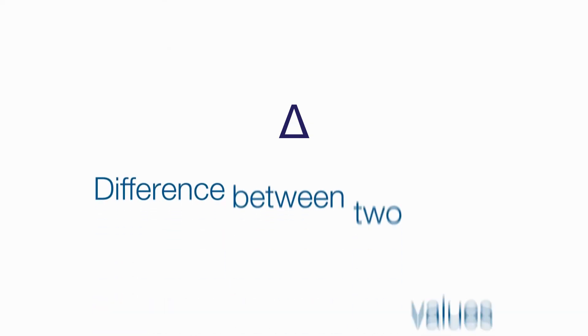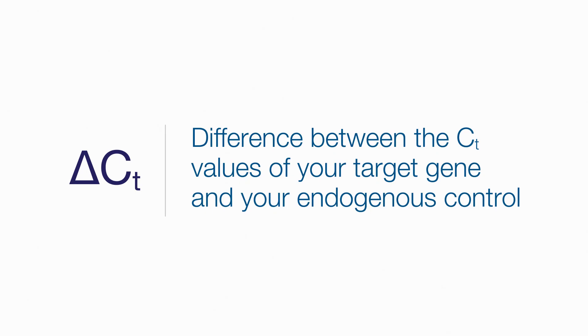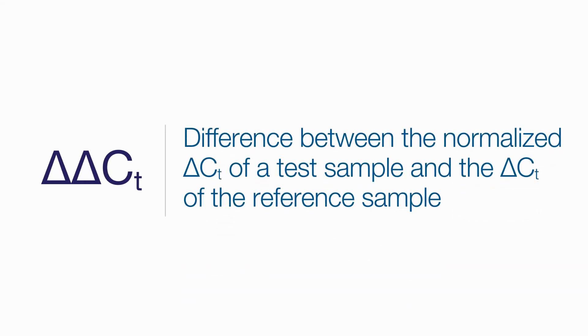You may run across a few other terms during data analysis. Any time the delta symbol appears next to a value, it indicates the value has been calculated as the difference between two other values. For example, delta CT, or DCT, is the difference between the CT values of your target gene and your endogenous control. Delta delta CT, or DDCT, is calculated during a comparative CT analysis in which the normalized delta CTs of a test sample and a reference sample are compared.